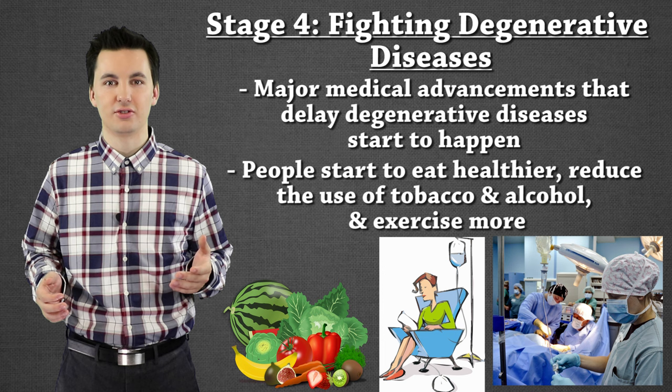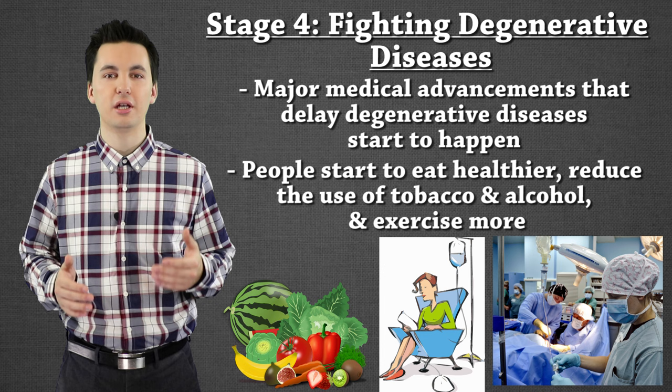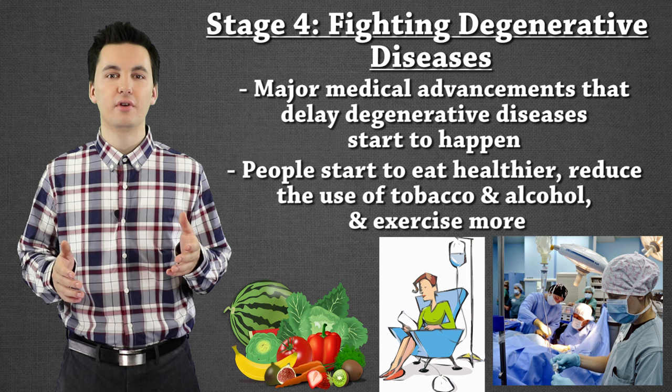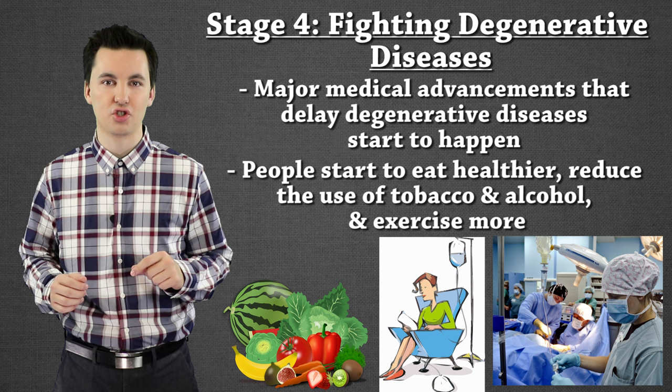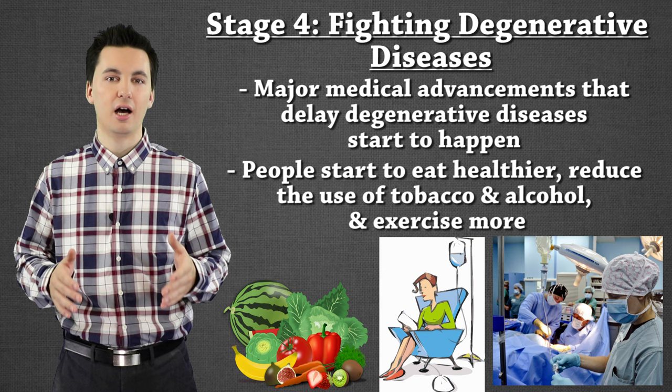If you become more complacent, sedentary, and eat more junk food, then you might start to have different health issues — connecting back to stage three where you're impacted by human-caused diseases. But stage four is importantly categorized by fighting degenerative diseases and extending life even further. A lot of the developed world today is in stage four, right at the end of the demographic transition model. We're no longer being killed by minor diseases; now we're fighting cancer, heart attacks, obesity, and diabetes — new forms of disease.